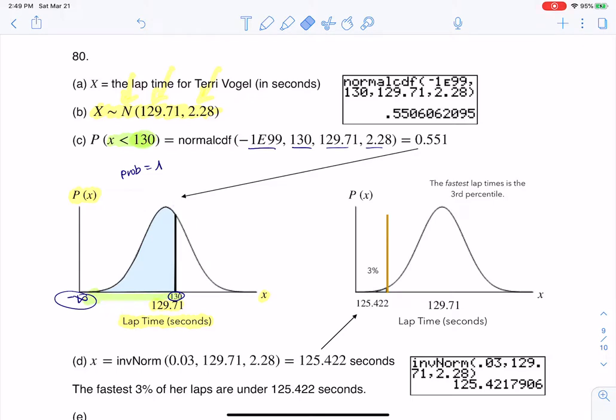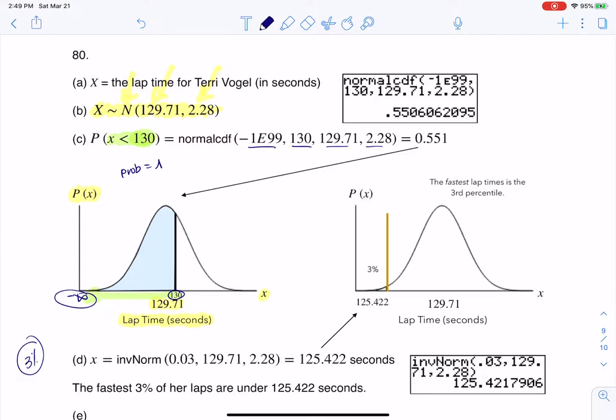All right, so part D said, what are the fastest 3% of her laps? So there, if I'm asking for the fastest 3%, so part D, I gave you fastest 3%. When I give you a percent, that's the percentile type of problems. So if I want the fastest 3%, that is actually the third percentile.